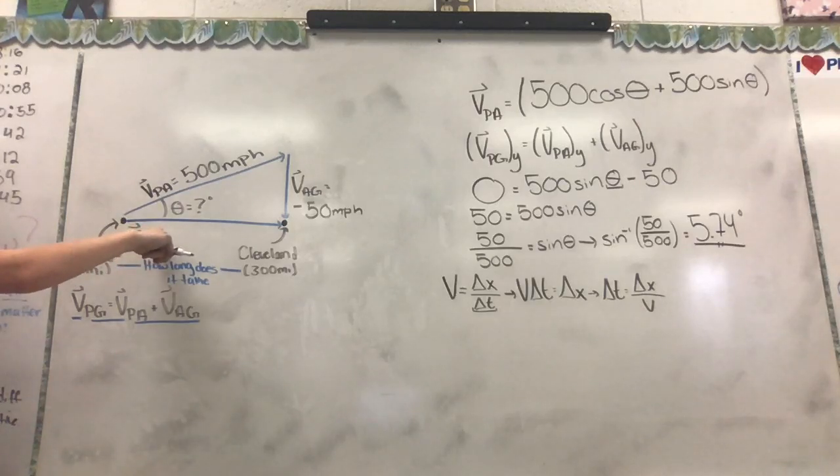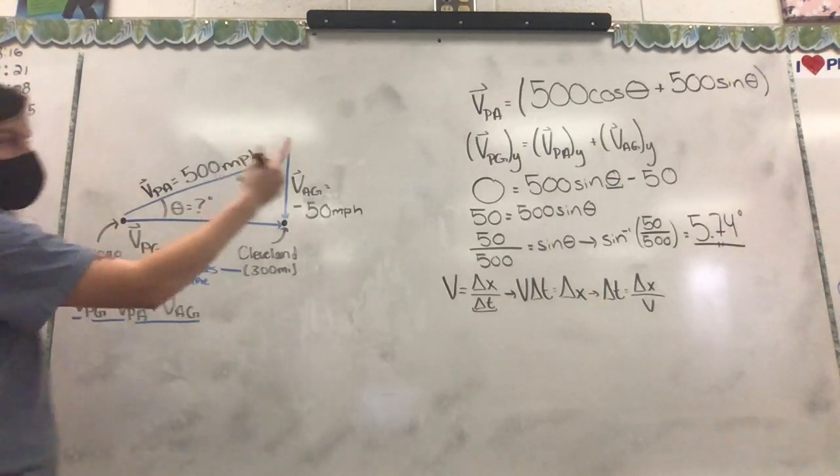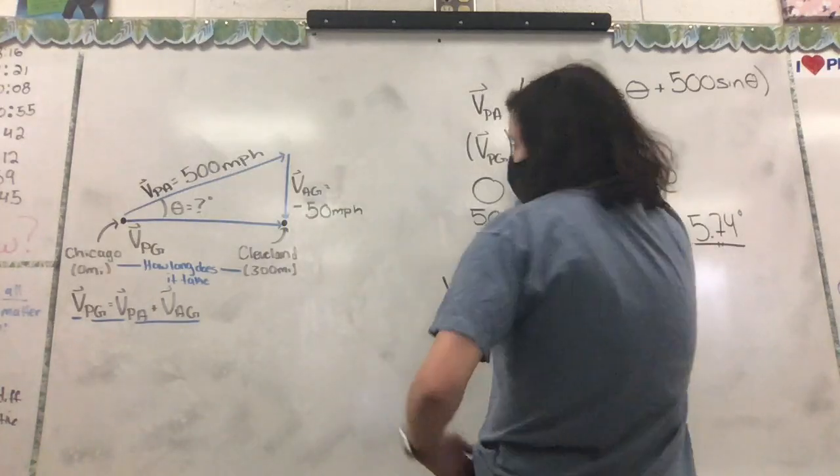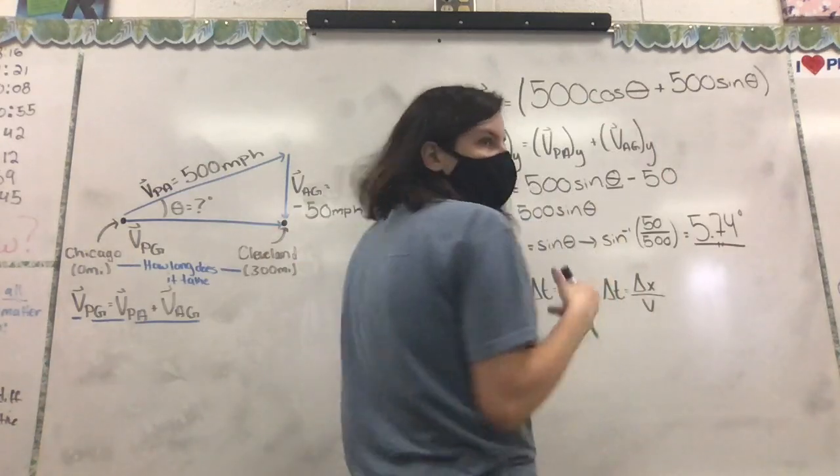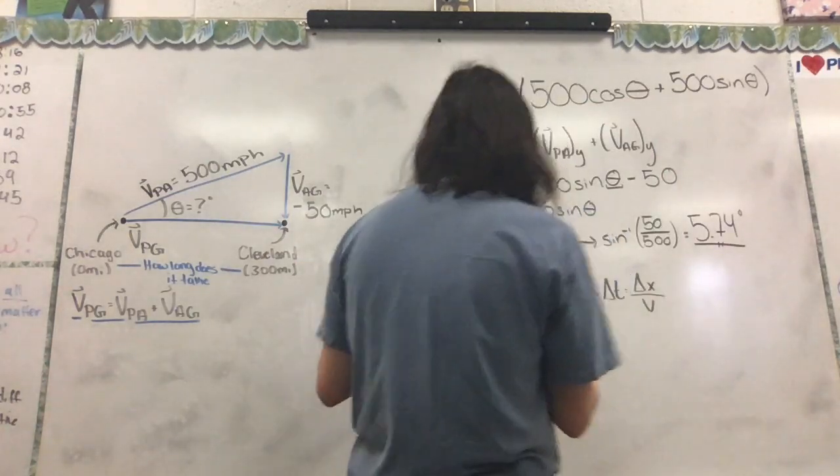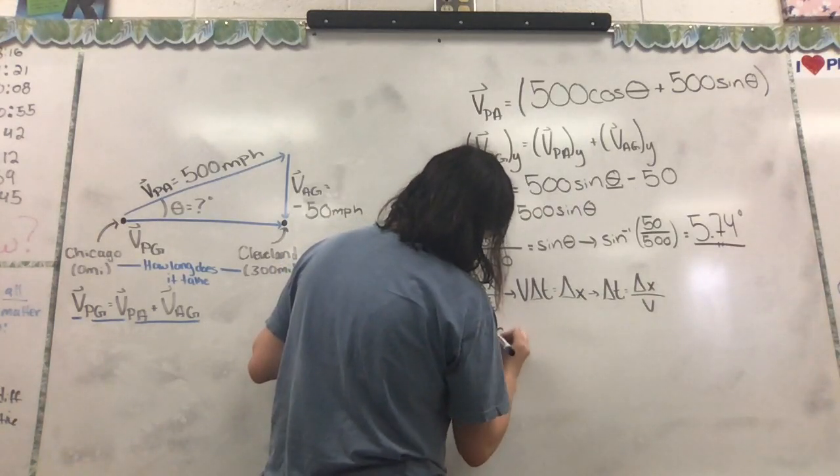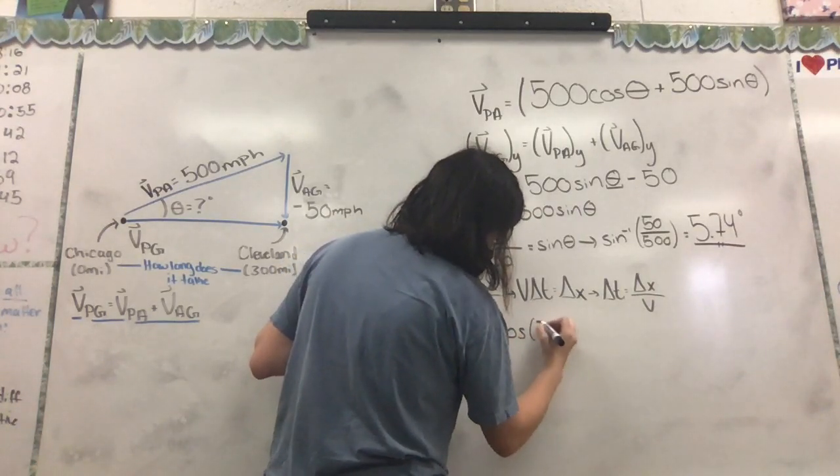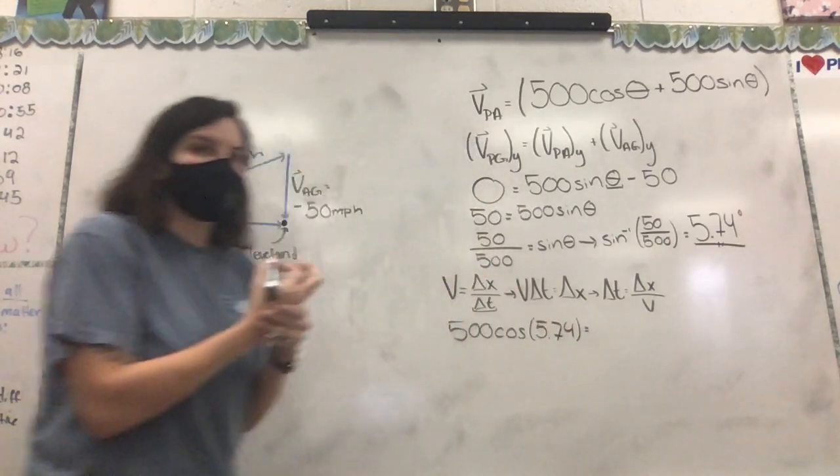And to find this velocity, wouldn't we just do 500 cosine of 5.74? Because see how it's adjacent? So that would give us this right here, which also makes sense because the way the picture is drawn, isn't the X component just the velocity of the plane to the ground? Yeah. So we're going to do 500 cosine of 5.74. And what velocity is that going to give us?